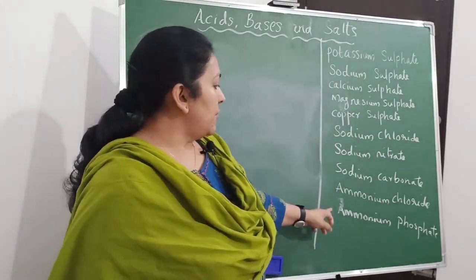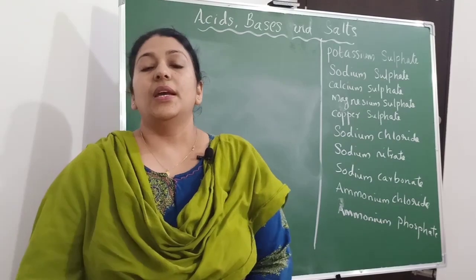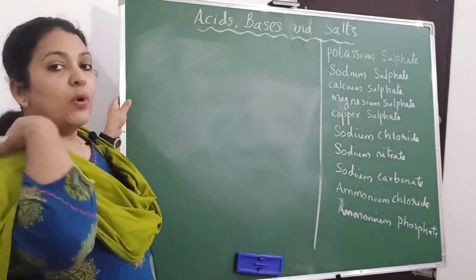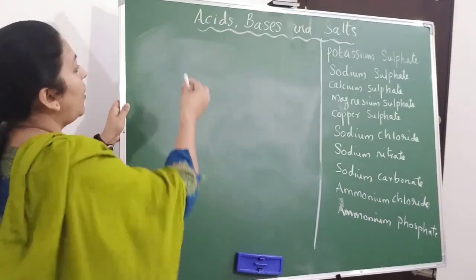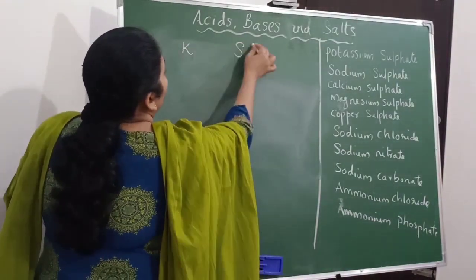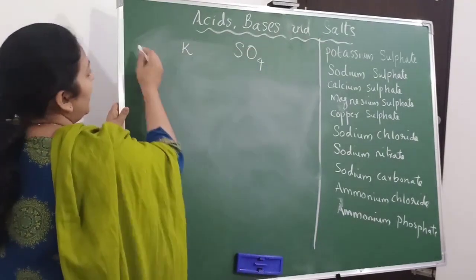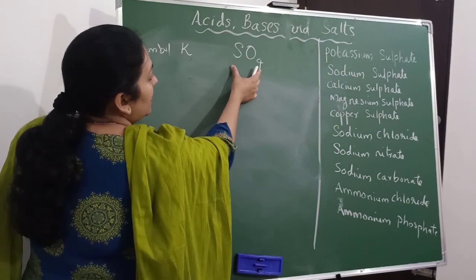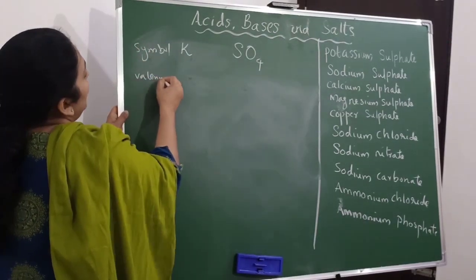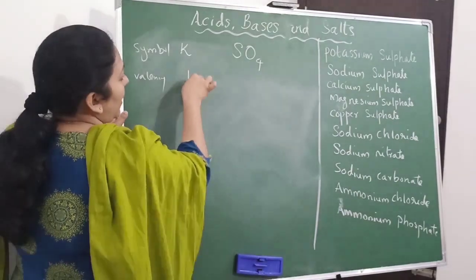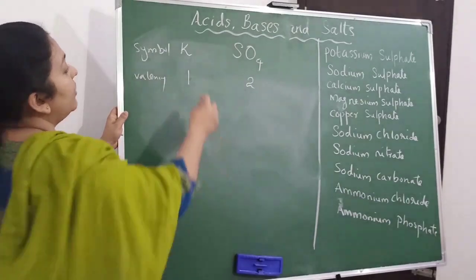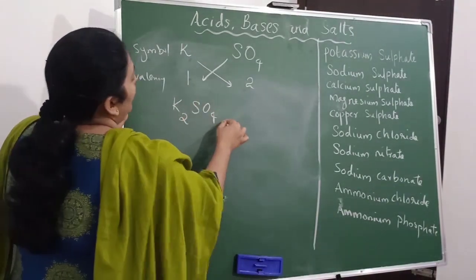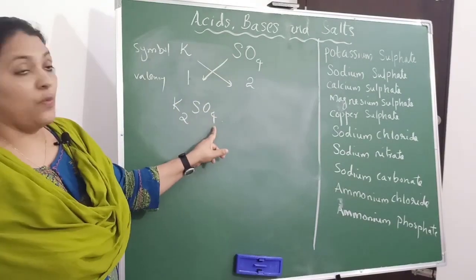I have written some examples of salts on the board. Let's write the chemical formulas of those salts. First, potassium sulfate. We write the symbol — potassium is K, sulfate is the polyatomic ion SO4. Then we write the valency — potassium is 1 and sulfate is 2. We swap around the valencies, so potassium sulfate is K2SO4. If the subscript is 1, we do not write it.